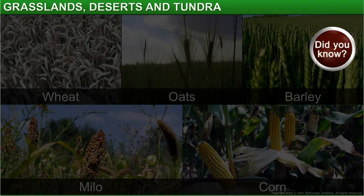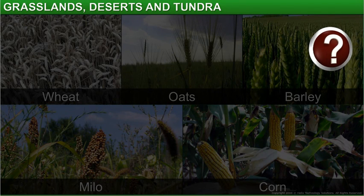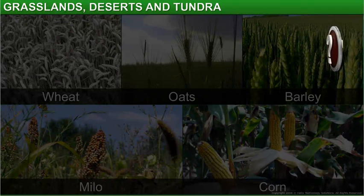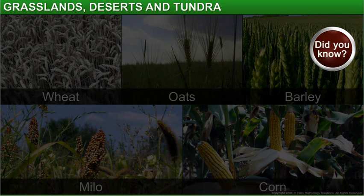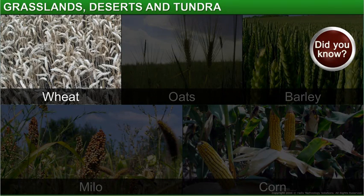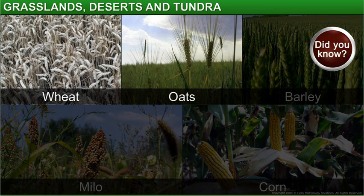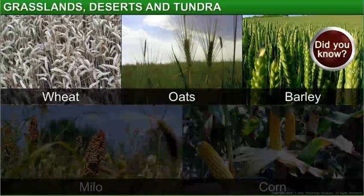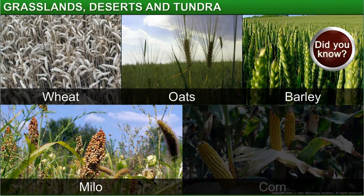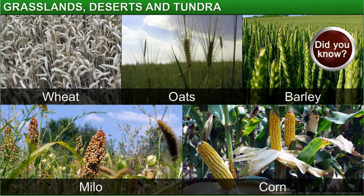Did you know that the soil of temperate grasslands is very fertile? That is why grasslands are major farmlands for growing cereal crops such as wheat, oats, barley, milo, and corn.